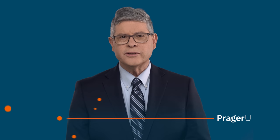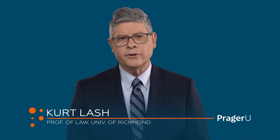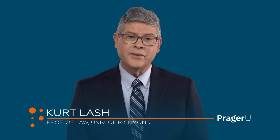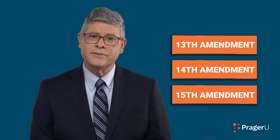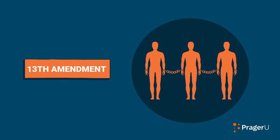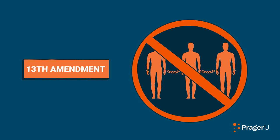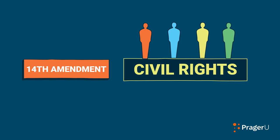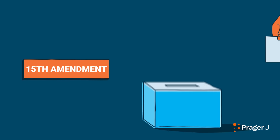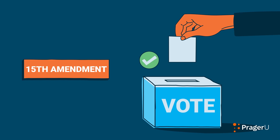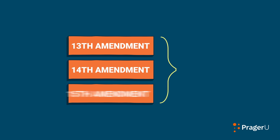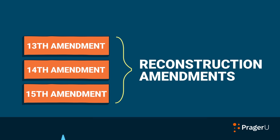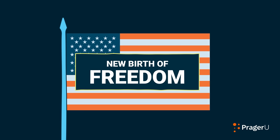As Americans began the business of reconstructing their country after a bloody civil war, they also reconstructed their Constitution. That was the purpose of the 13th, 14th, and 15th Amendments. The 13th Amendment abolished slavery, the 14th Amendment enhanced the civil rights of all citizens, and the 15th Amendment guaranteed the right to vote regardless of race. Together, these three amendments, known as the Reconstruction Amendments, declared a new birth of freedom in the United States.